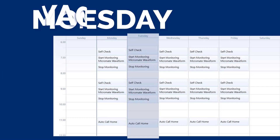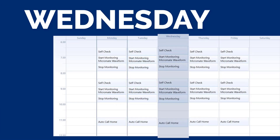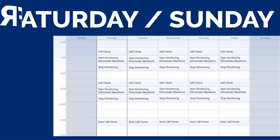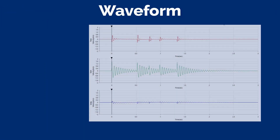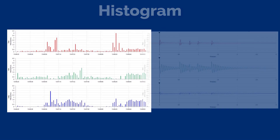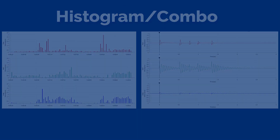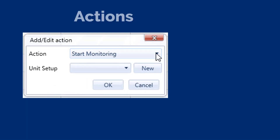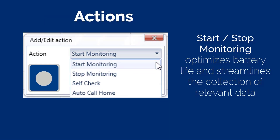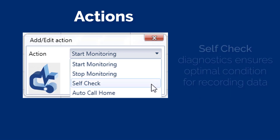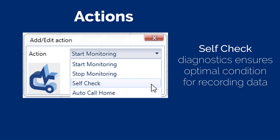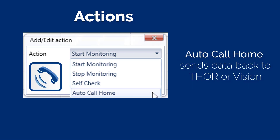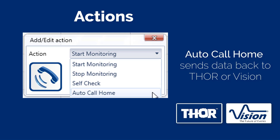Thor's scheduler tool allows you to pre-program the date, time, length of data you need to record, and the mode you would like to monitor, whether it's waveform, histogram, or histogram combo mode. Actions such as automatic start-stop monitoring for selected time windows greatly optimizes battery life and streamlines the collection of relevant data. The self-check diagnostics action ensures the Micromate and its sensors are in working condition for recording data. The Auto Call Home action sends data back to a local computer running Instantel's Thor software or to Instantel's cloud-based Vision platform.